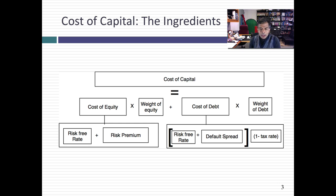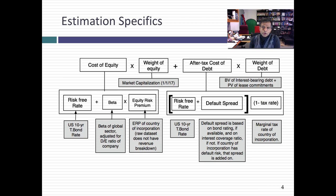That's pretty straightforward. So at the start of every year, including this one, I compute the cost of capital for every company — that's 42,668 companies — and I have to make some broad assumptions to get this done. Here's how I computed the cost of capital at the start of 2017. First, I decided to do all of the cost of capital for all companies in U.S. dollars. Not because I wanted to be parochial, but it's easy once you get a U.S. dollar cost of capital to convert to any other currency. The risk-free rate on January 1st, 2017 that I used was the 10-year T-bond rate of 2.45%. So that's my starting point for every single company.